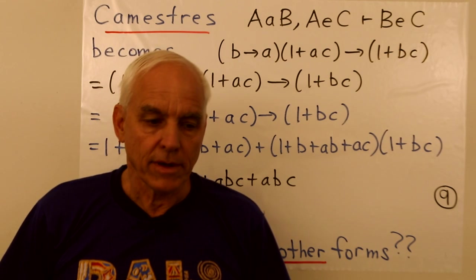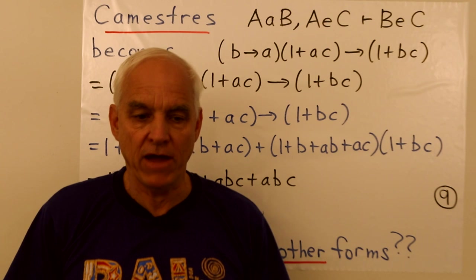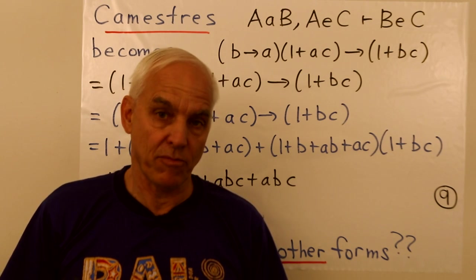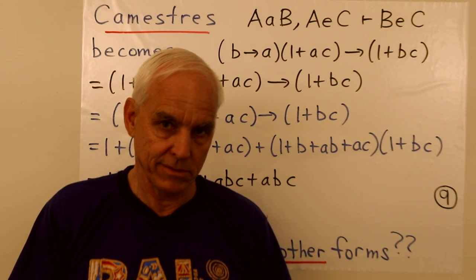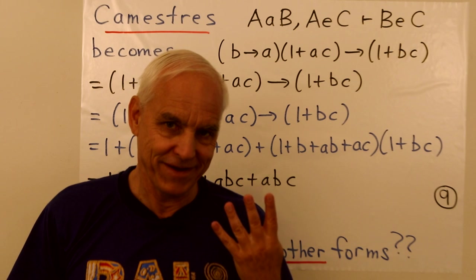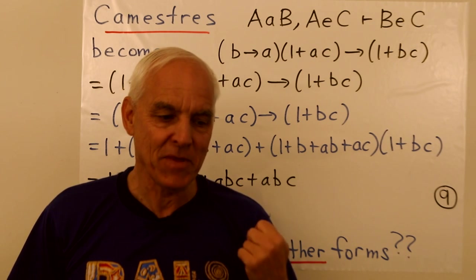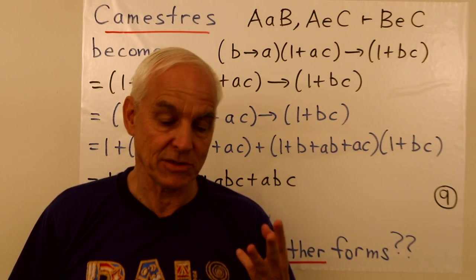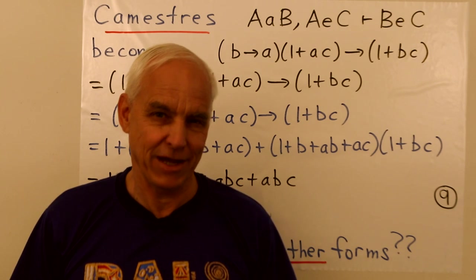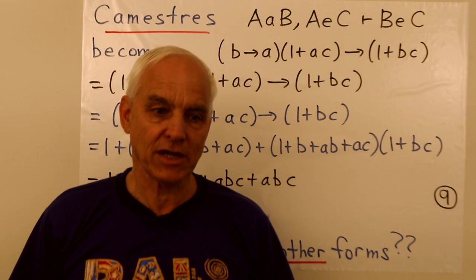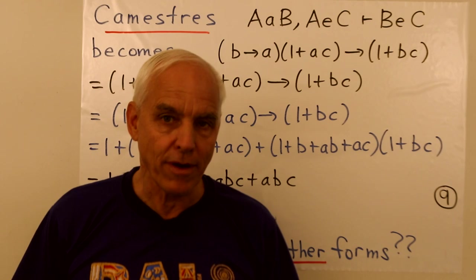So this is good. It's good in the sense that we now have a completely algorithmic way of proving the syllogisms, but only four of them in Aristotle's list. So even in the first, second, and third syllogisms, there's actually 14 of them all together. So we're missing quite a few.